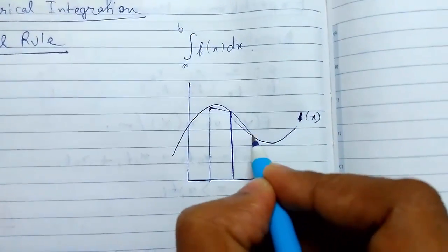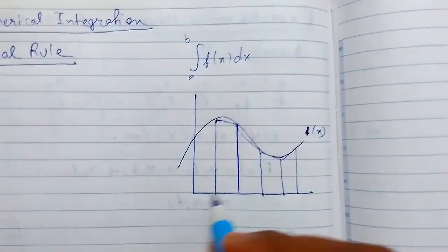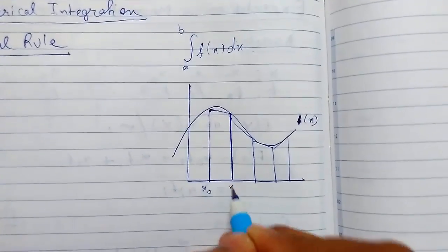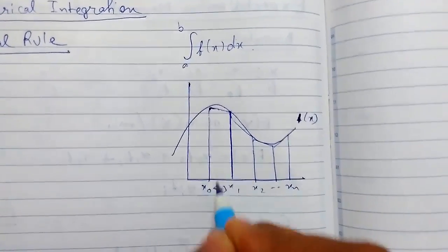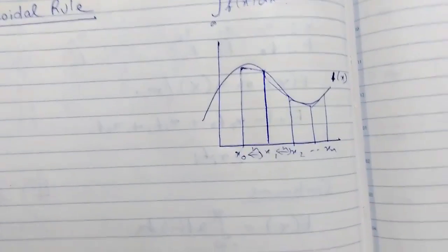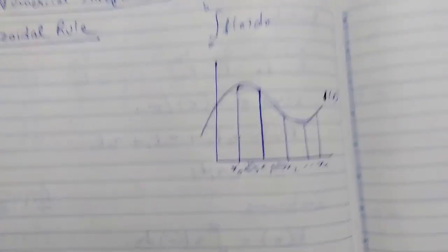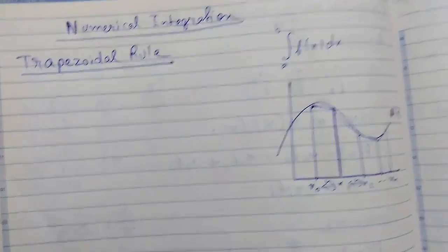Suppose this is x0, x1, x2, up to xn, and all these intervals are h. These are divided into trapezias. This is how it works.